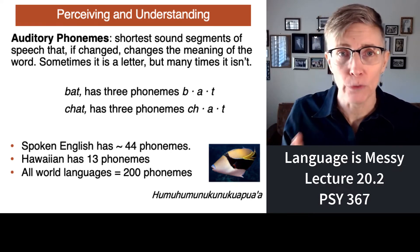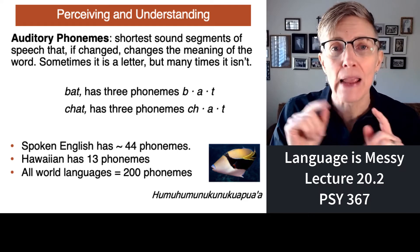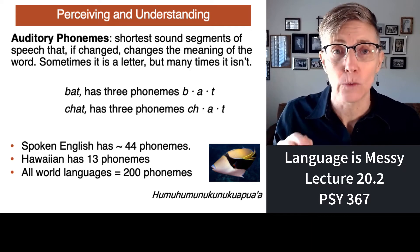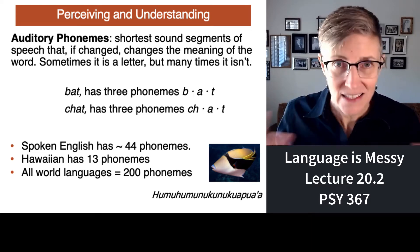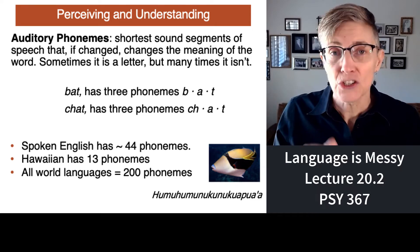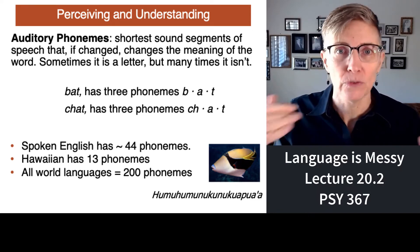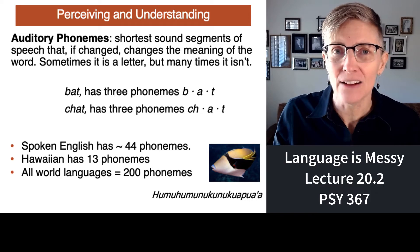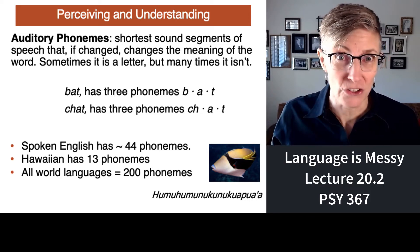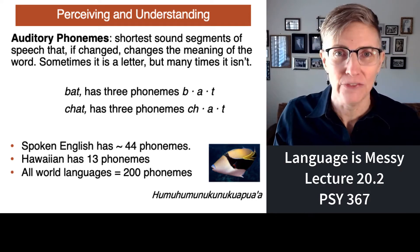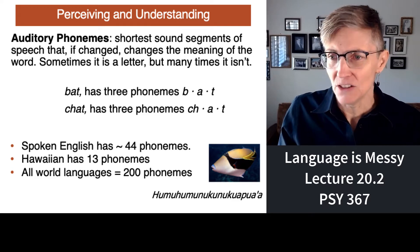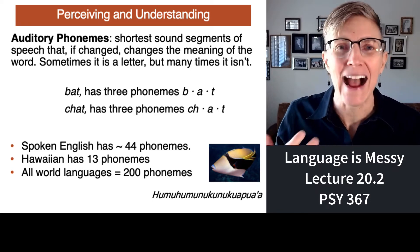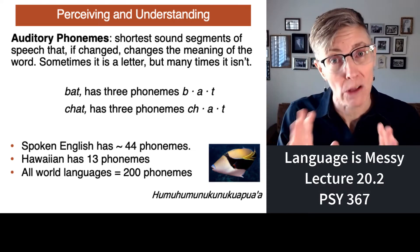English has 44 phonemes — if you can make those 44 sounds, you can say every word in English. Hawaiian, which is a beautifully melodic language, has only 13 phonemes. So if you have fewer sounds, you have to make bigger words — like the Hawaiian state fish, 'humuhumunukunukuapuaa,' something like that. Long words because of a smaller number of phonemes.